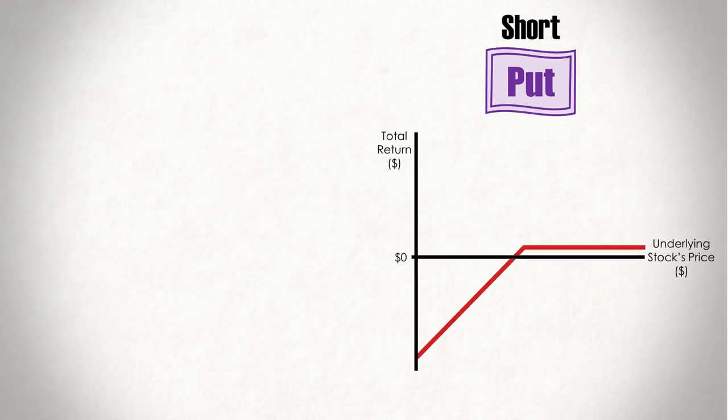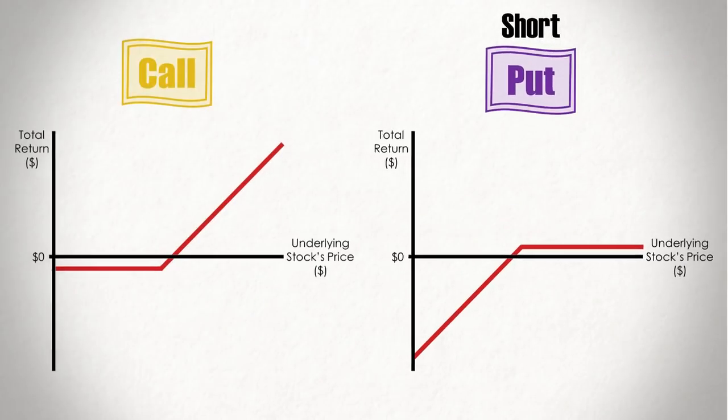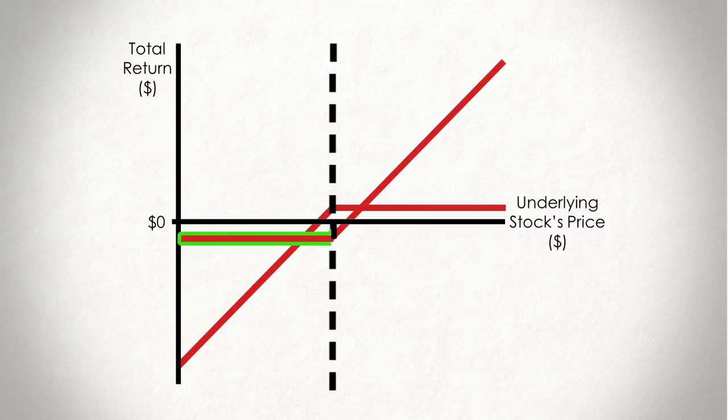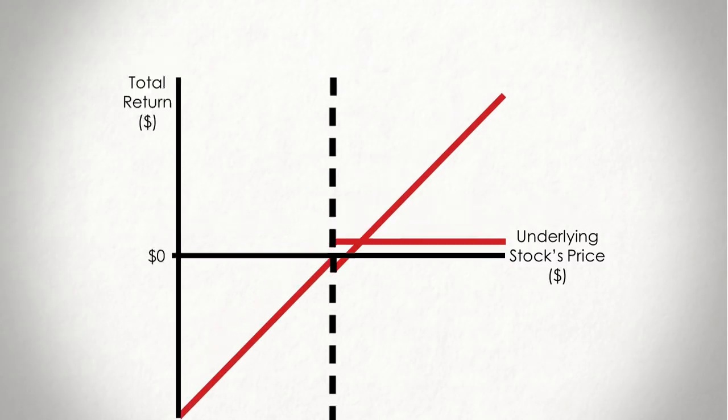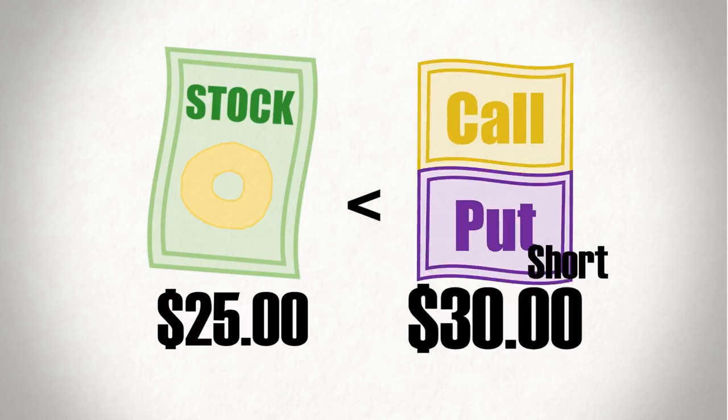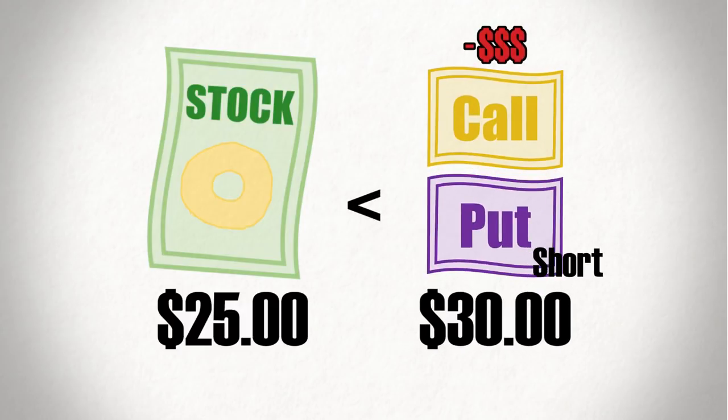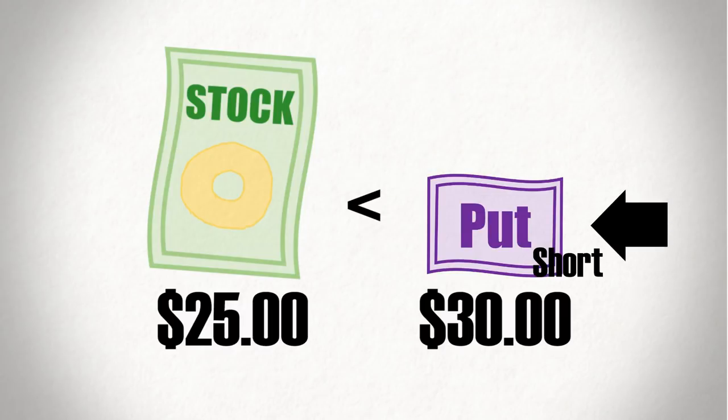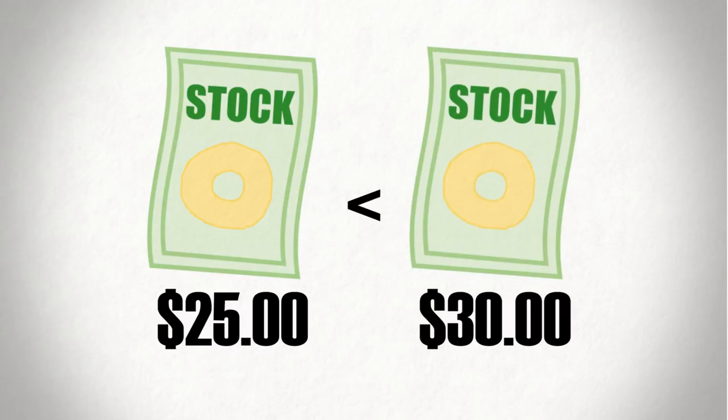So let's take a moment to combine what we have so far. On the left side of the strike price, adding the cost of our call premium and the money we'd lose on our put will pull the line down slightly. This is because when the stock's price ends up below our strike price, we lose money on both of our positions. The call option we purchased becomes useless. And since we sold the put option, we'll have to buy the stock at the put's strike price, even though it isn't worth that amount.